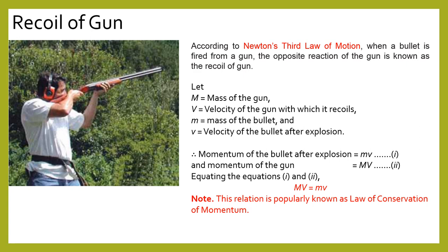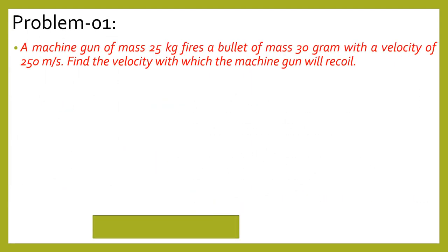Let us find out the momentum. Momentum is the product of mass into velocity. The momentum of the bullet after explosion is m × v, and the momentum of the gun after explosion is M × V. Equating these two expressions, we get: M × V = m × v. This relation is popularly known as the law of conservation of momentum.